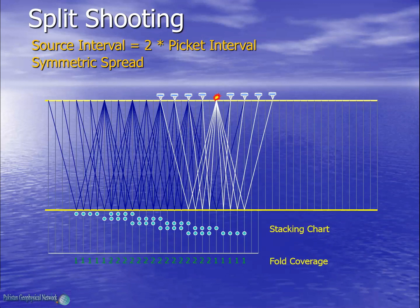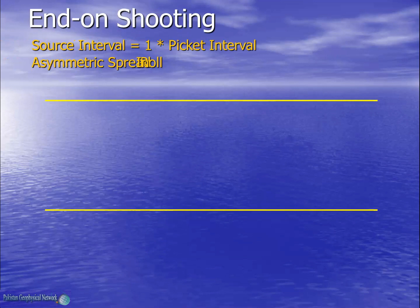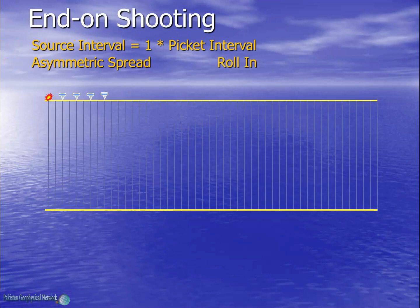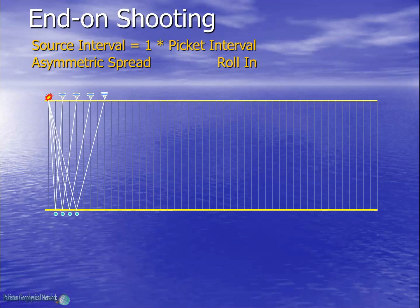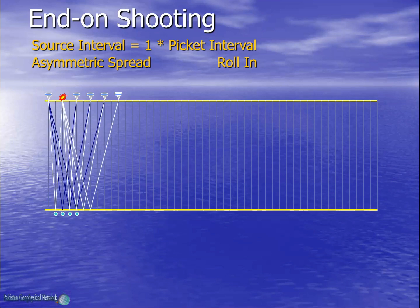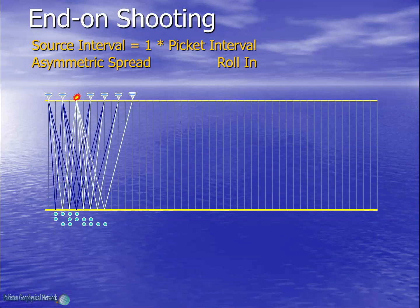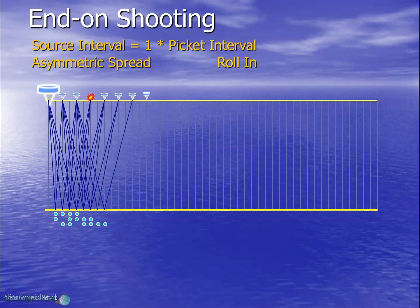We can see that now the maximum fold is 2. Now let's consider an end-on shooting with an asymmetric spread. As we can see, we don't have equal number of geophones on both sides of the source. We take a shot and mark the reflection points. The spread moves forward and we add a geophone at the back end — this is called rollin. In this way the spread moves forward and we keep on adding geophones until the spread becomes symmetric.